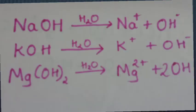For base solutions, these are the various reactions with different types of bases. Sodium hydroxide gives sodium ions and OH- ions. Potassium hydroxide gives potassium ions and OH- ions. Magnesium hydroxide gives magnesium ions and OH- ions.